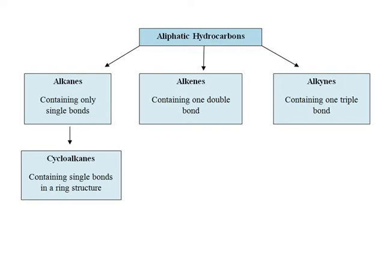Alkanes, sometimes called paraffins, are saturated hydrocarbons in which all four valence bonds of carbon are satisfied by hydrogen or by another carbon. Alkanes have straight or branched chains but without any rings in their structures.